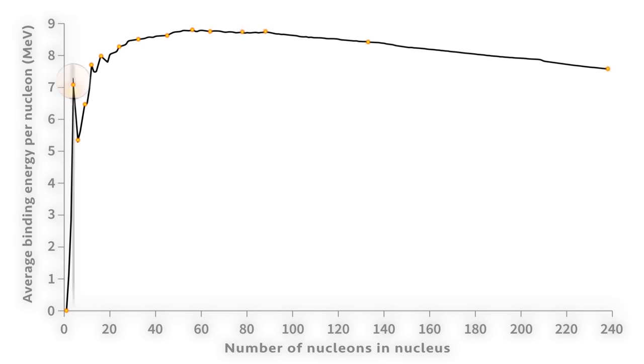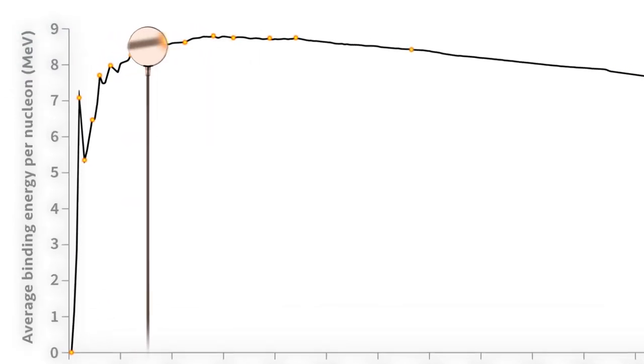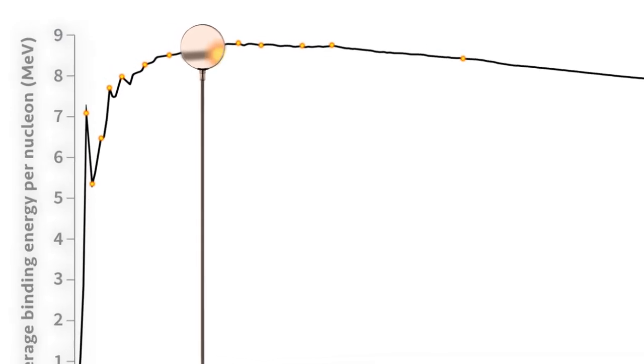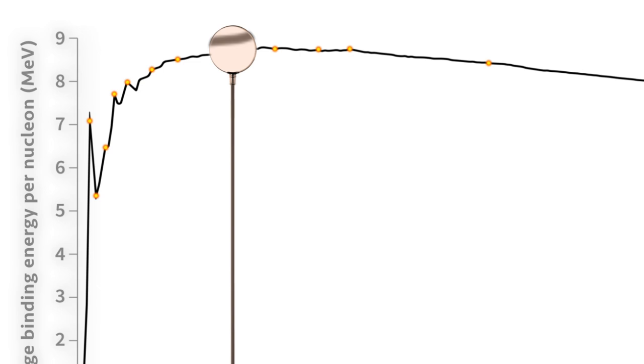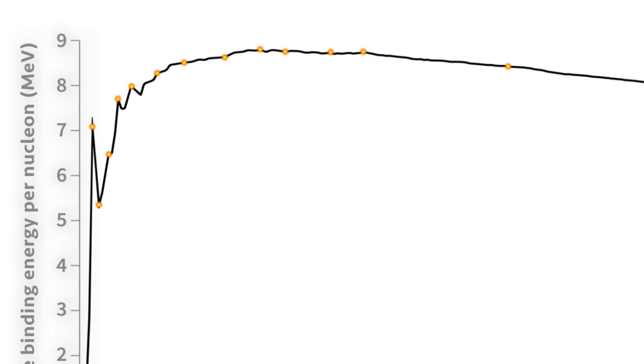At first, as you move from the lighter elements like hydrogen on the left, you can see that the average binding energy increases as more and more nucleons interact with each other using the strong nuclear force. More nuclear binding energy leads to a more stable nucleus, so stability increases as we go up the scale. This trend eventually peaks with iron, which is the most stable element, and begins to decline gradually with heavier elements.